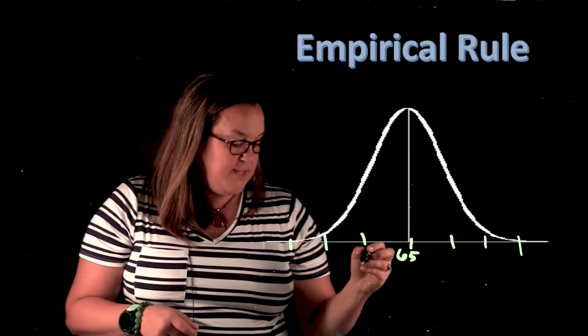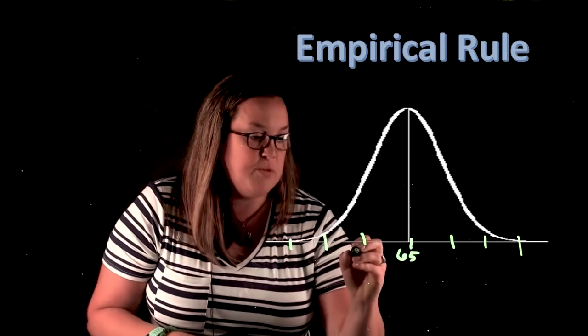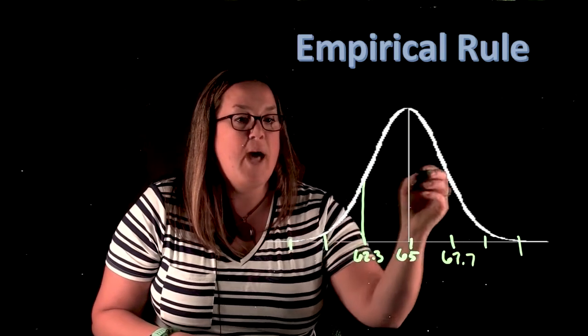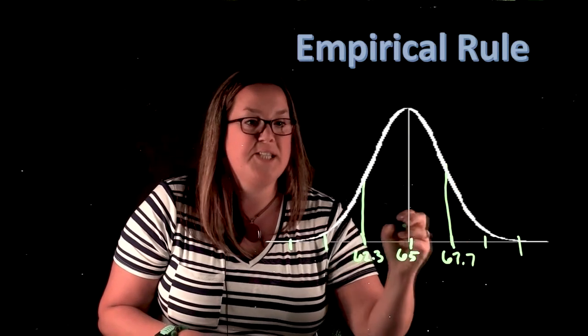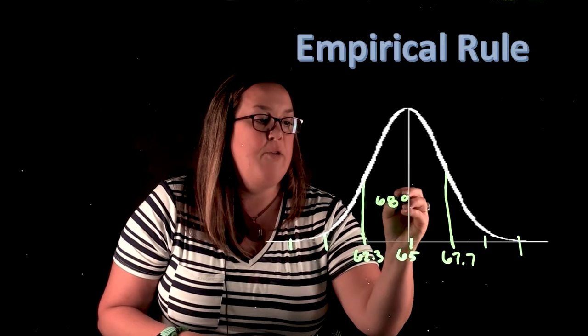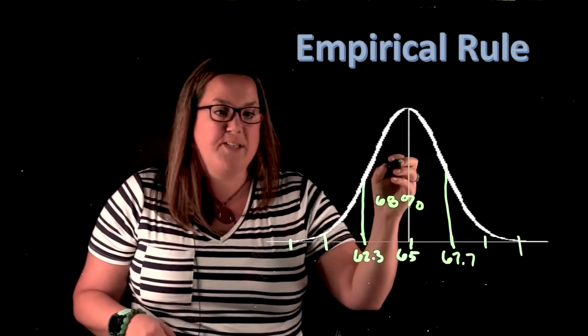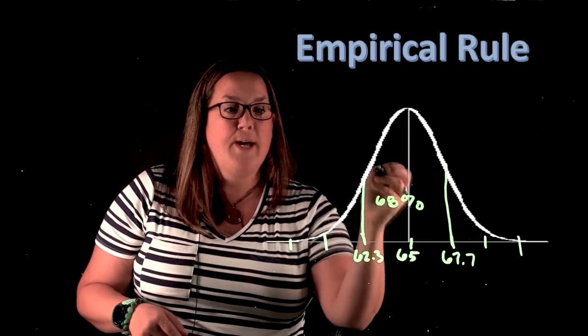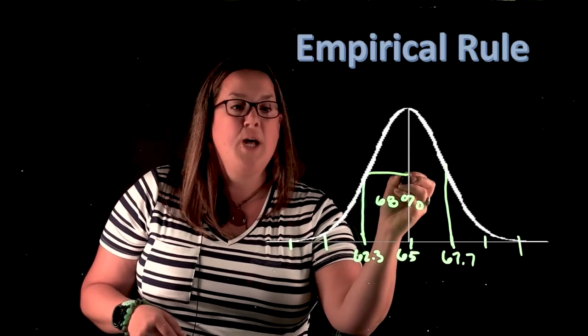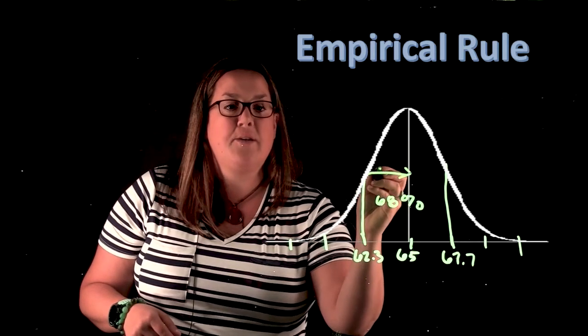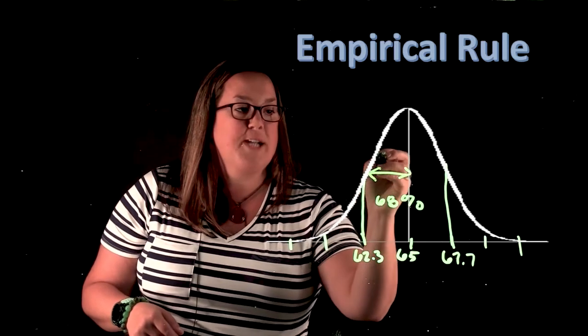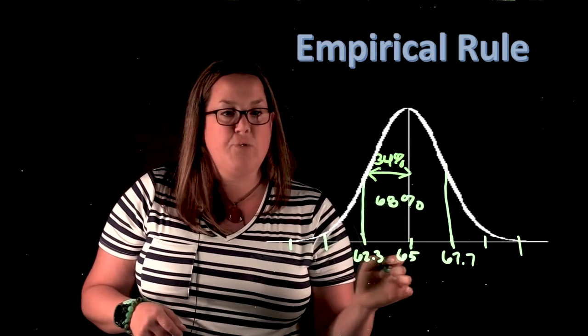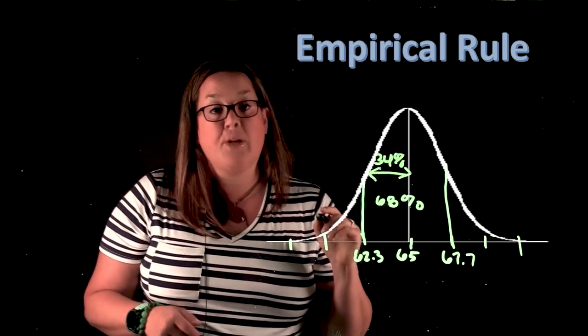We calculated on the last page that the interval would be 62.3 up to 67.7, and remember that includes 68% of our observations. Now the other thing to notice is, because this curve is completely symmetric, if I actually only wanted to talk about the heights between 62.3 and 65, I could just take that 68 and divide by two. So in this small section, we would have 34% of our data—so between 62.3 and 65 inches, 34% of females would have those heights.